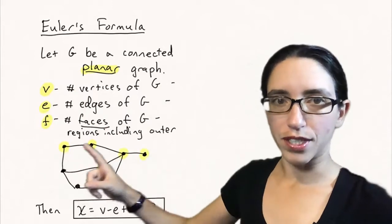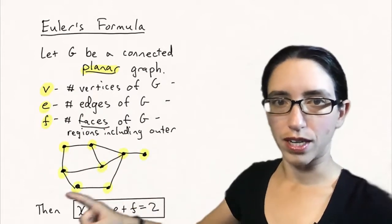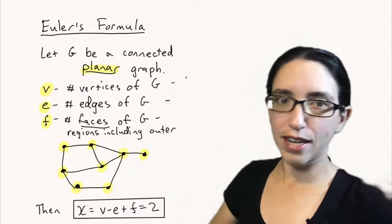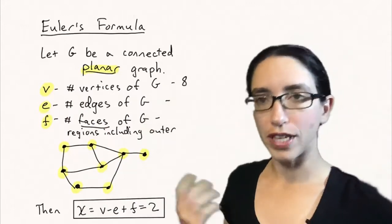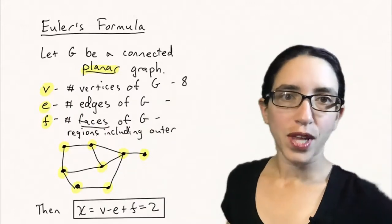Let's first count the vertices: one, two, three, four, five, six, seven, eight. There are eight vertices, so V is eight in this case.